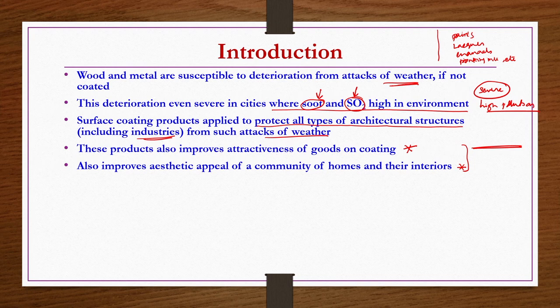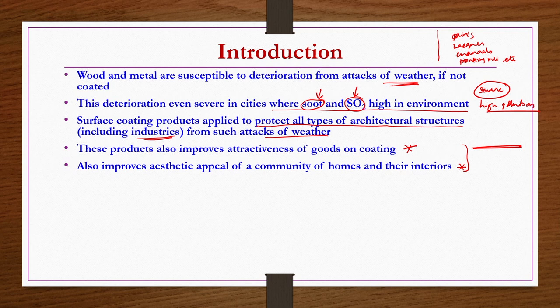Surface coating products also improve aesthetic appeal of a community of homes and their interiors. Not only for protection, but also to improve attractiveness of goods and structures. Paper is one example of industrial production where glossy coatings are applied. Plastics and rubbers also require surface coating products — for designs or writings on plastic items, printing ink is needed, which comes under surface coating industry products.